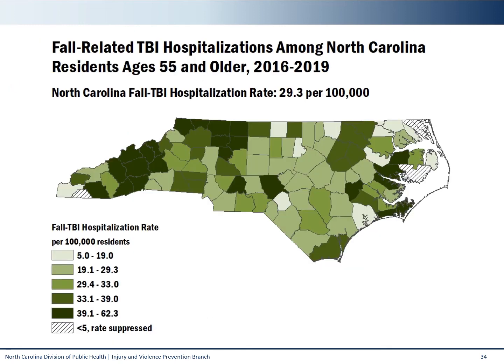Similar to the previous map, here we see a breakdown of fall-related TBI hospitalization rate by county, with darker colors equating to higher rates. The overall rate of fall-related TBI hospitalization among those 55 and older was 29.3 per 100,000 residents from 2016 to 2019. This data is aggregated over four years to provide greater reliability. Some counties have been suppressed due to the instability of rates based on small numbers. Here we see pockets of increased rate of fall-related TBI hospitalizations, mainly in western North Carolina but also in some of the coastal regions in the east.